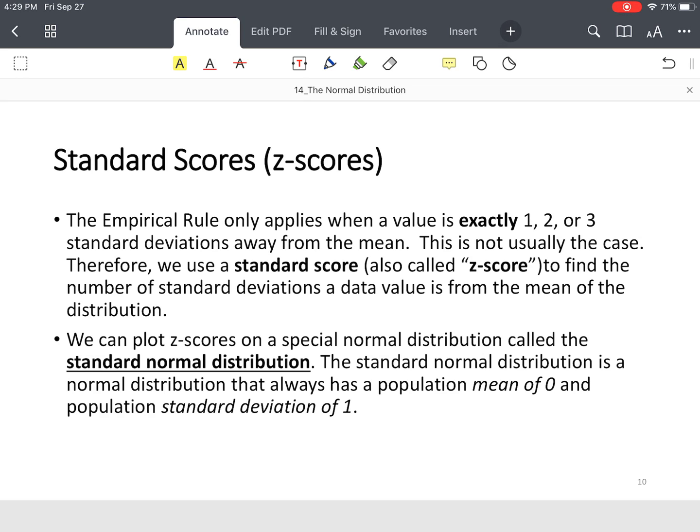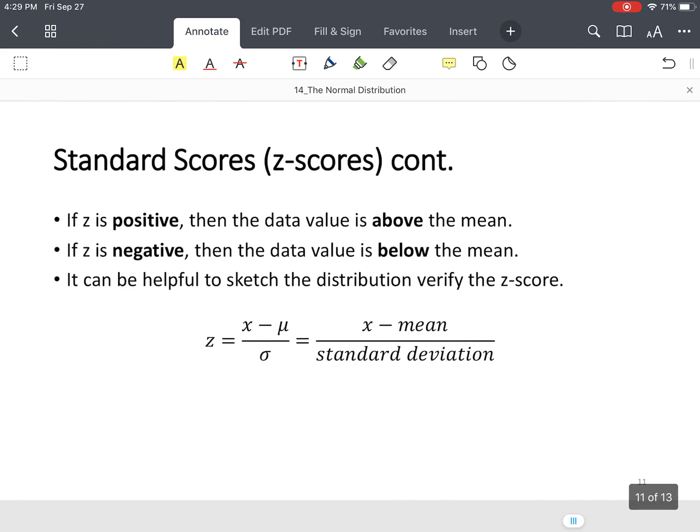We'll have what's called a standard normal distribution. The standard normal distribution has a mean of zero and a standard deviation of one. To find a z-score, if the z-score is positive, we say it's above the mean. If the z-score is negative, we say it's below the mean. The formula is z equals x, your data value, minus mu, your mean, divided by sigma, your standard deviation.